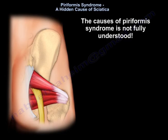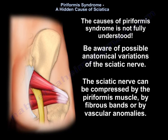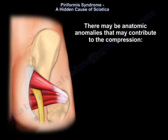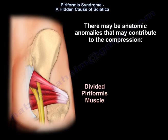The causes of piriformis syndrome are not fully understood. Be aware of possible anatomical variations of the sciatic nerve. The sciatic nerve can be compressed by the piriformis muscle, by fibrous bands, or by vascular anomalies. There may be anatomic anomalies that contribute to the compression, including variation in the sciatic nerve or a divided piriformis.